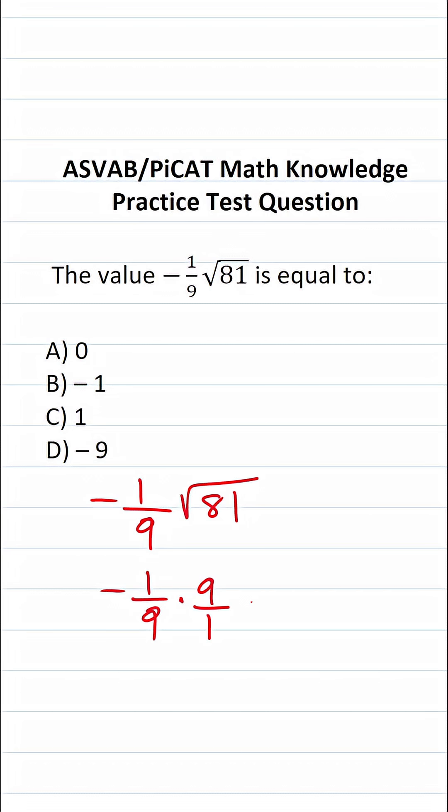A negative times a positive is always negative. When you multiply two fractions, you multiply straight across. So this becomes negative one times nine over nine times one. Let's work this out step by step: one times nine is nine, nine times one is nine.